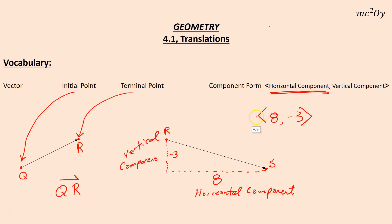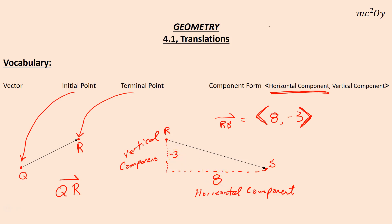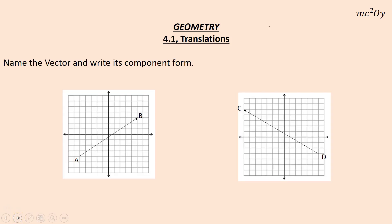We put these angle brackets here to show that it's a component form referring to a vector. So vector RS in component form would be written as ⟨8, -3⟩. I made up those numbers just to illustrate component form. With that information, we can go ahead and try some different problems.